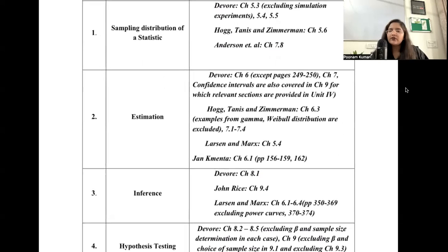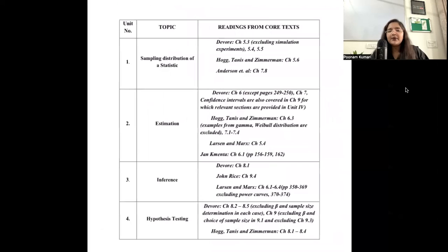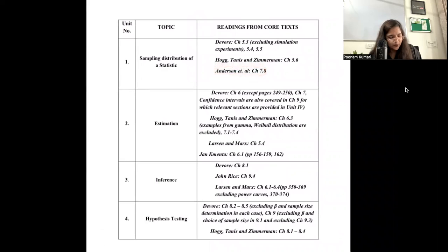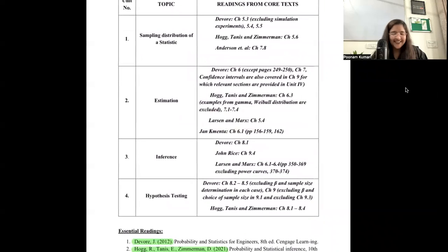Devore and Hogg, Tanis & Zimmerman are the two primary reading books. Other books have small specific sections assigned. Devore is basically a primary reading for understanding almost everything, and the same goes for the Hogg book. What not to cover from each has also been clearly mentioned. Some smaller supplementary books are Anderson et al., Larson and Marks, Jan Kmenta, and John Rice.